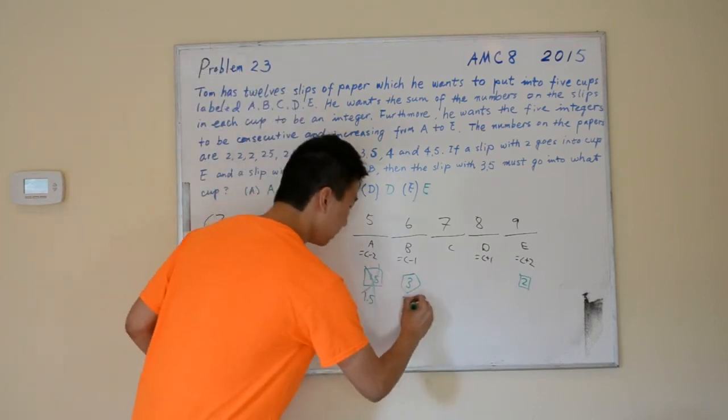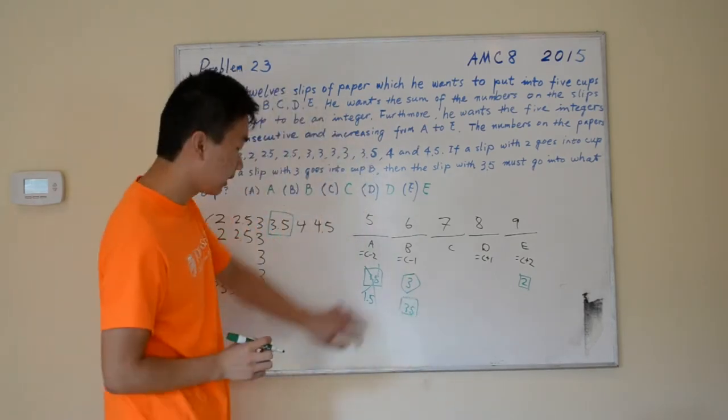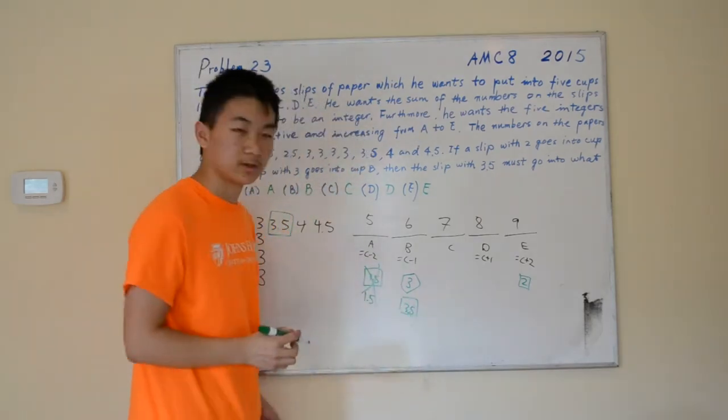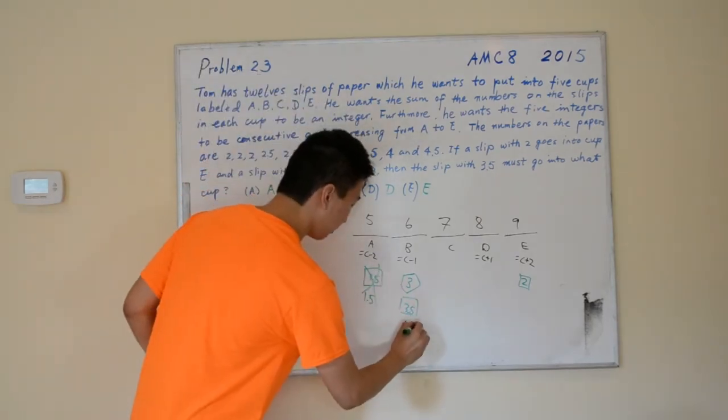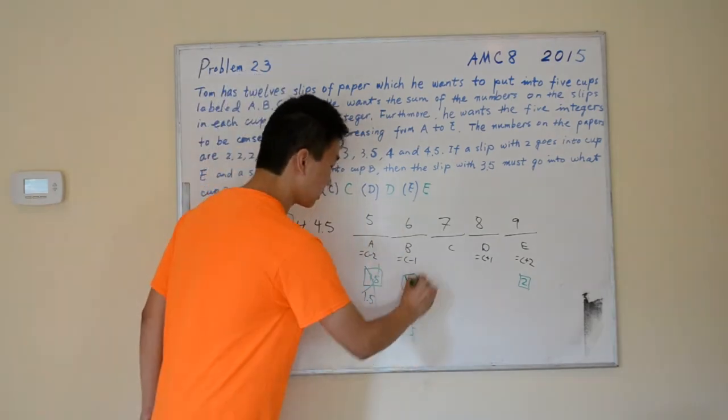Let's try putting it into B. 3 plus 3.5 gives us 6.5, and 6.5 is greater than 6, so this is not possible.